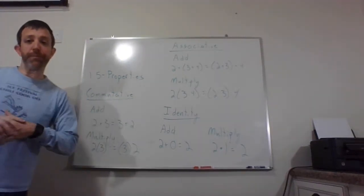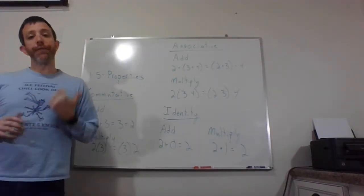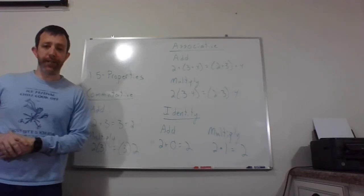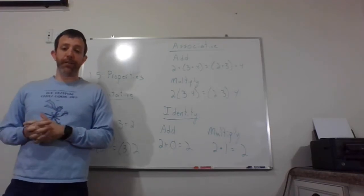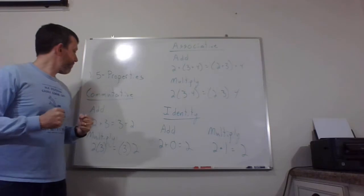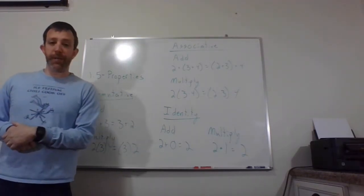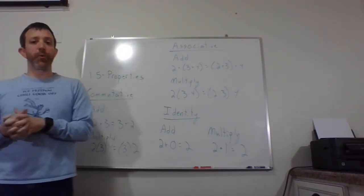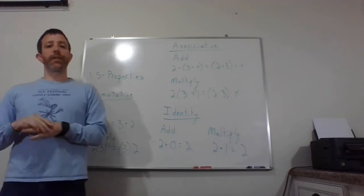All right, welcome to section 1.5, Properties of Real Numbers. We have five basic properties we're going to look at here, and I'm going to give you examples of how they all work. You can see I have three on the first board here, and then we'll get the other two when I clear the board off.